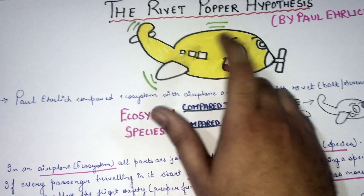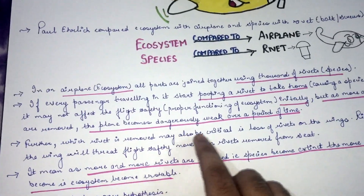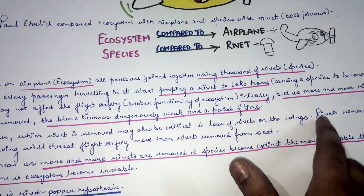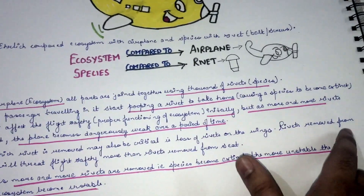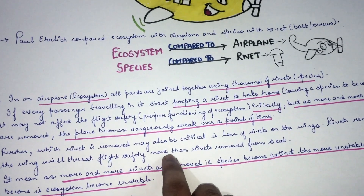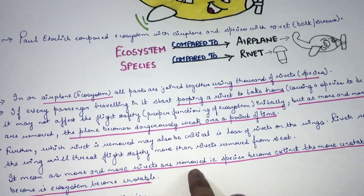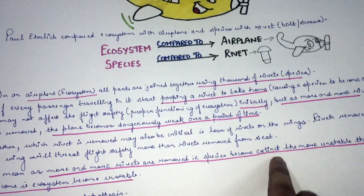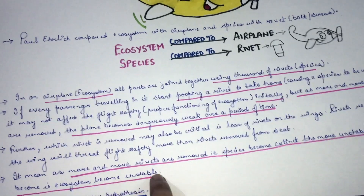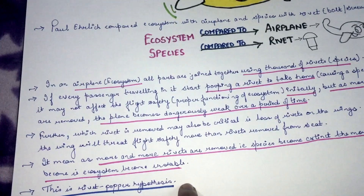Rivets removed from the wings of the airplane are more threatening to flight safety than those removed from the seat. More and more rivets removed means species becoming extinct, making the plane — that is, the ecosystem — increasingly unstable. This is the Rivet Popper Hypothesis.